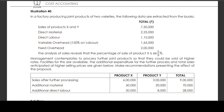Management contemplates to process further joint products so that they could be sold at higher rates. Facilities for this are available. The additional expenditure for the further process and total sales anticipated at higher selling prices are given below. Make recommendations presenting the effect of the proposal.